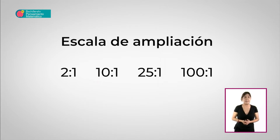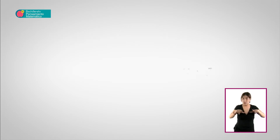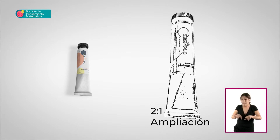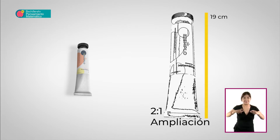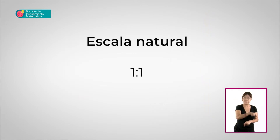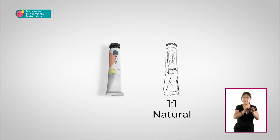La escala de ampliación se usa cuando se necesita hacer el dibujo del objeto más grande que el objeto real. Por ejemplo, en la escala 2 a 1 significa que dos unidades en el dibujo equivalen a una unidad en la realidad: el objeto es dos veces más pequeño en la realidad que en el dibujo. En el caso de la escala natural, las medidas del objeto y las de su dibujo son las mismas. Es la escala 1 a 1.